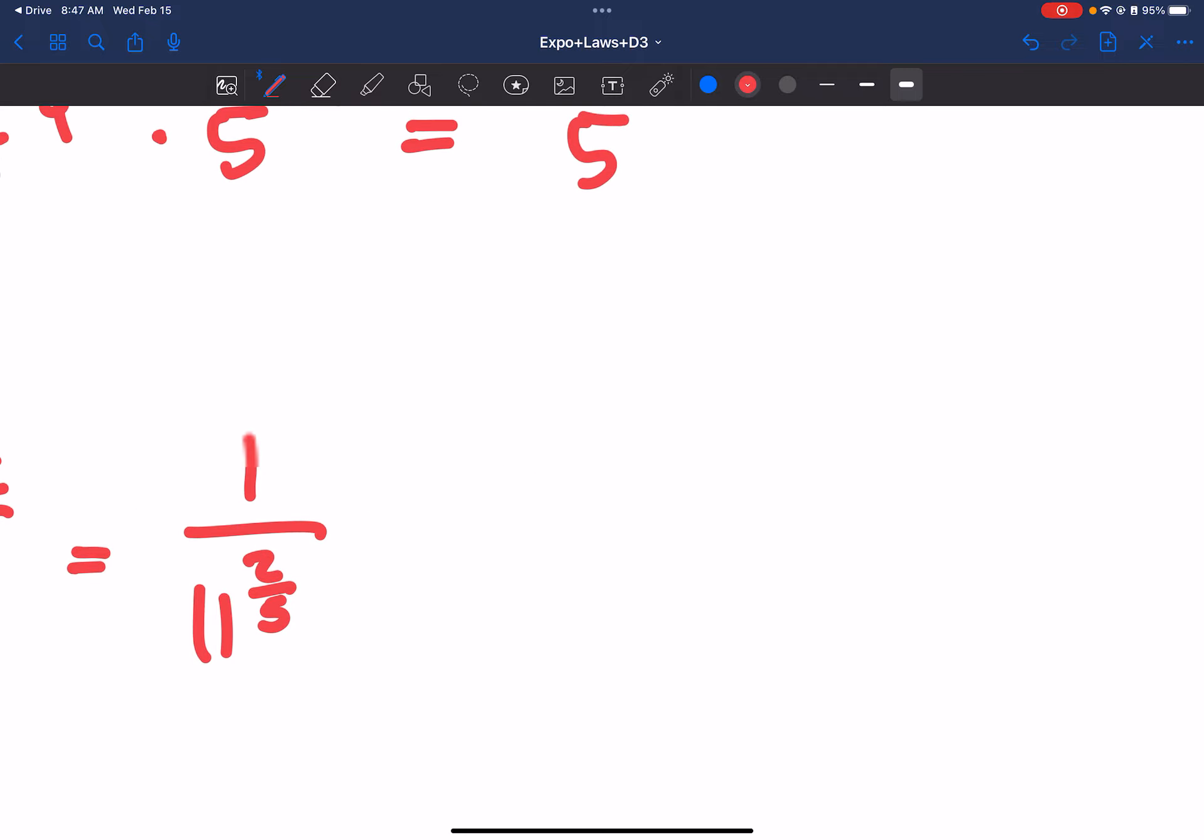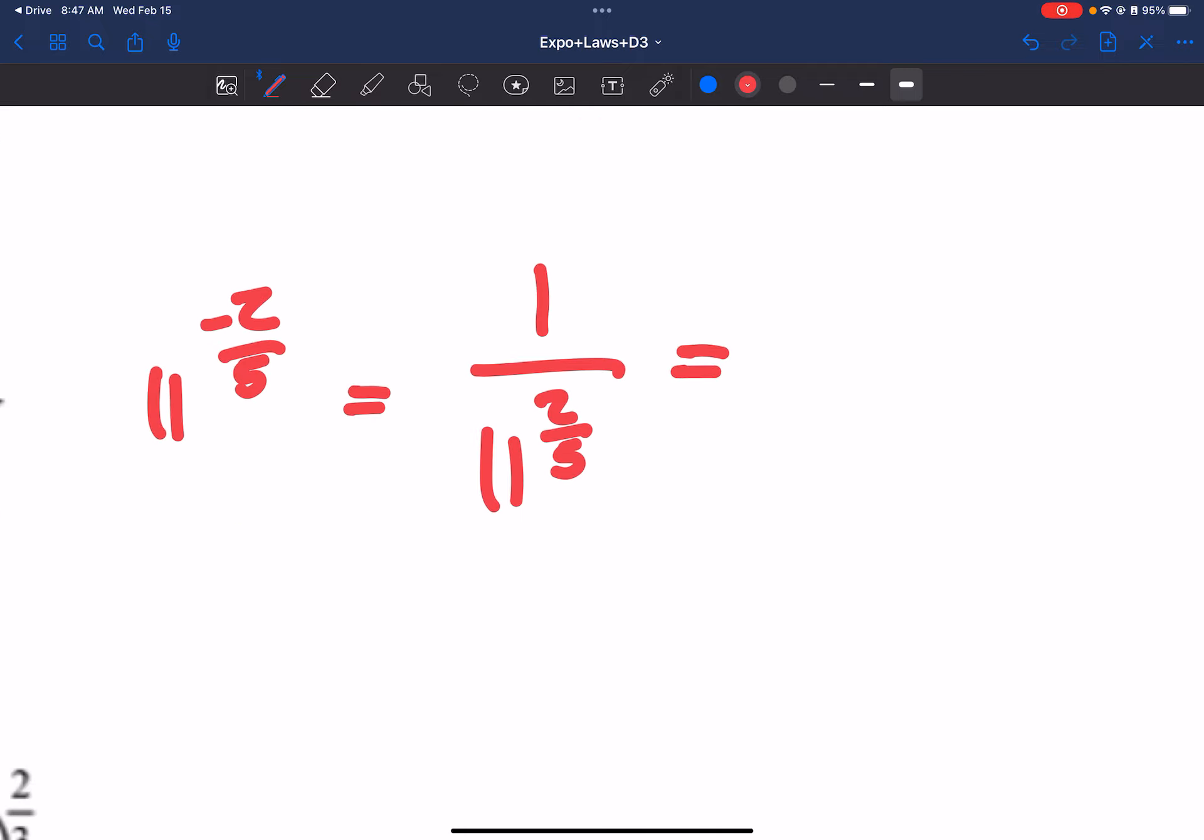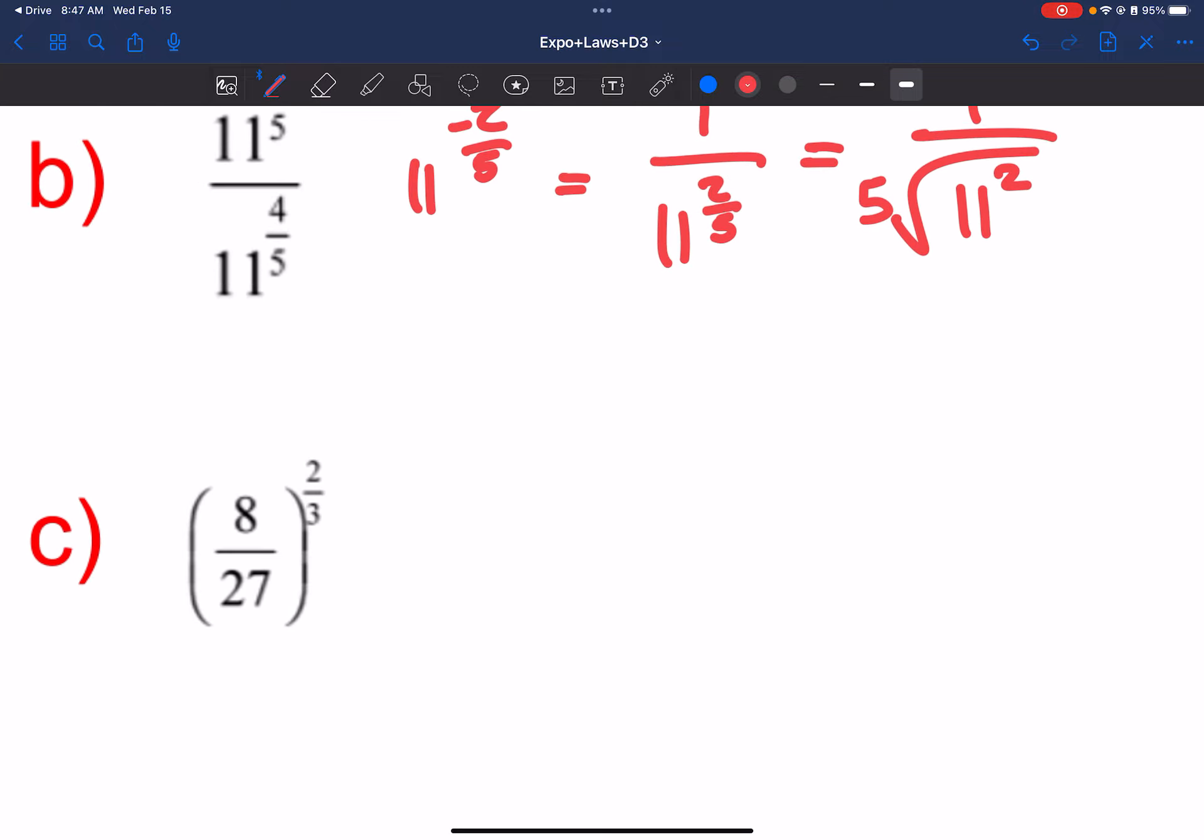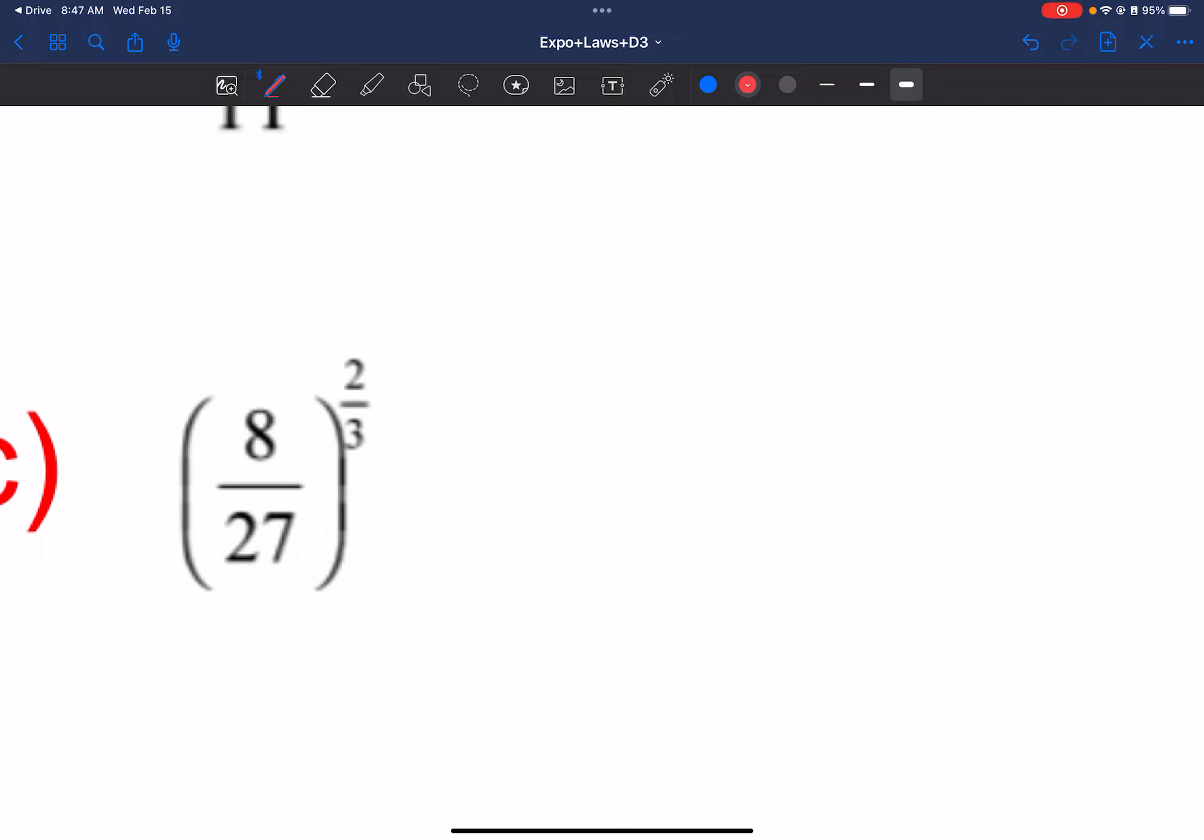Well, negative exponent is the same thing as 1 over 11 to the 2 5ths. And we can also convert that to a radical. So we can do 1 over 11 squared under a 5th root. And same kind of idea here. This one, that 2 3rds, we can bring that as an exponent on each of these things.